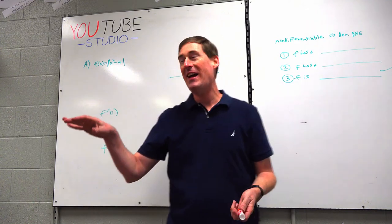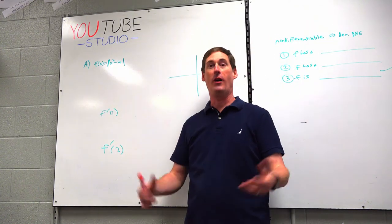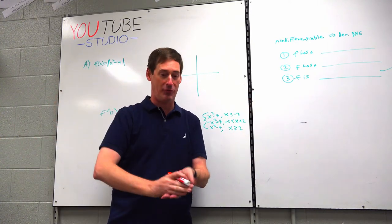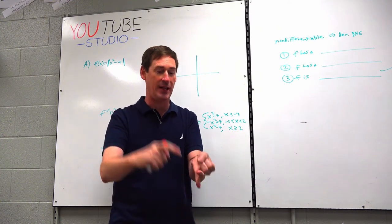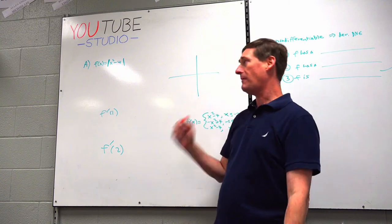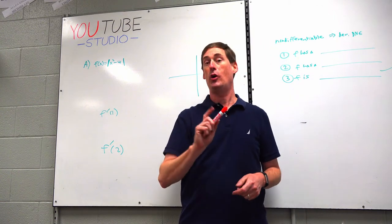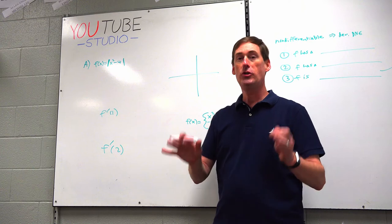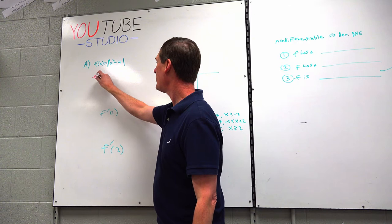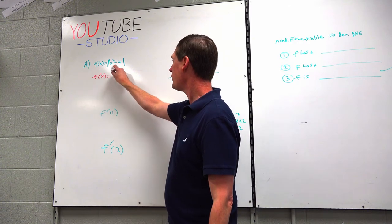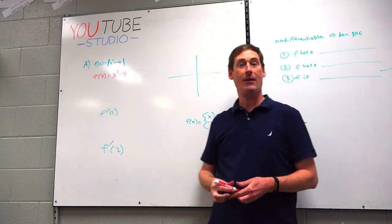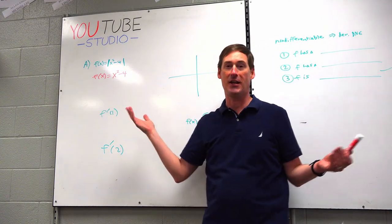F of X equals the absolute value of X squared minus 4. We've never graphed anything like this before. We've graphed everything under the sun if you had me for Integrated 3, especially, but also in calculus. But we haven't graphed the absolute value of X squared minus 4. What the heck does that look like?